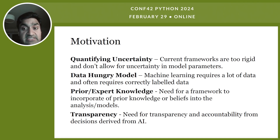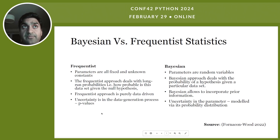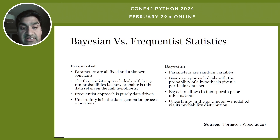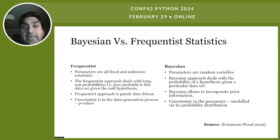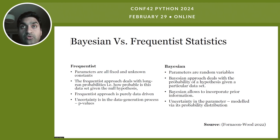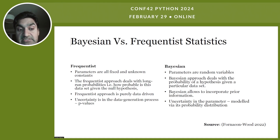Probabilistic programming emerges as a game changer. To understand probabilistic programming, it is essential to grasp Bayesian statistics and how it differs from the classical frequentist approach. In frequentist statistics, model parameters are treated as fixed quantities and uncertainty in parameter estimation is typically addressed through techniques such as confidence intervals. However, frequentist methods do not assign probability distributions to parameters, and their interpretation of uncertainty is rooted in long-run frequency properties of the estimators rather than explicit probabilistic statements about parameter values.